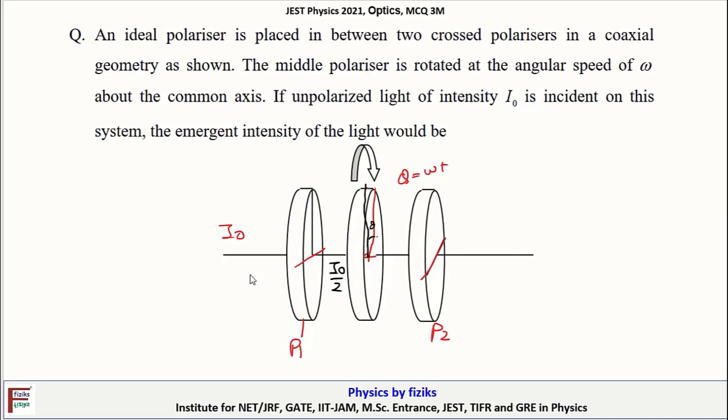Now when this would be emerging from another polarizer P3 rotated at an angle θ, then the component which would be passing P3 according to Malus's law would be I = I0/2 * cos²θ.